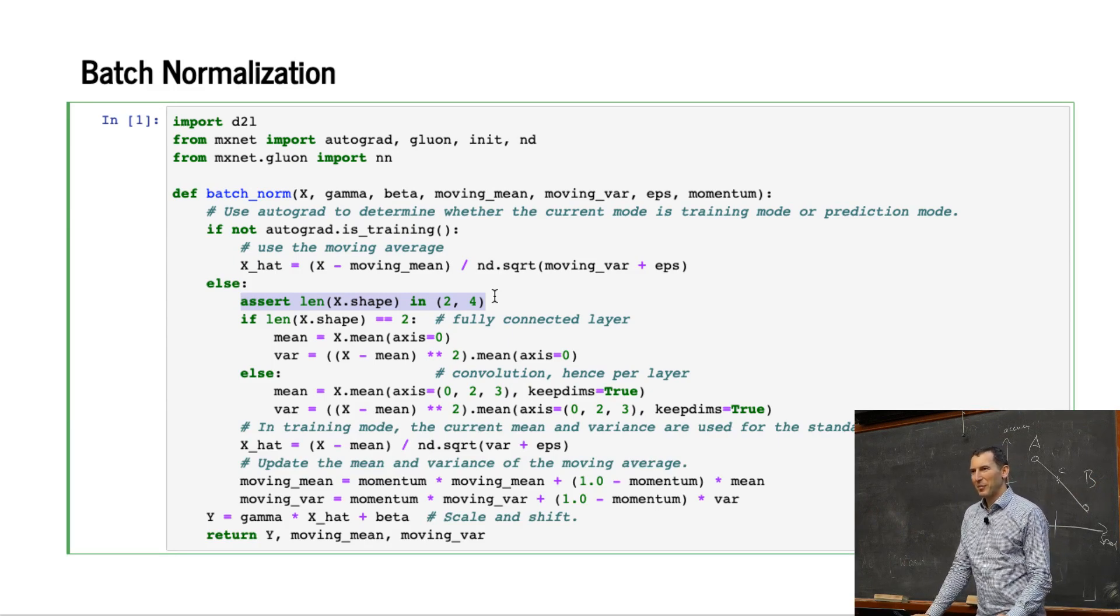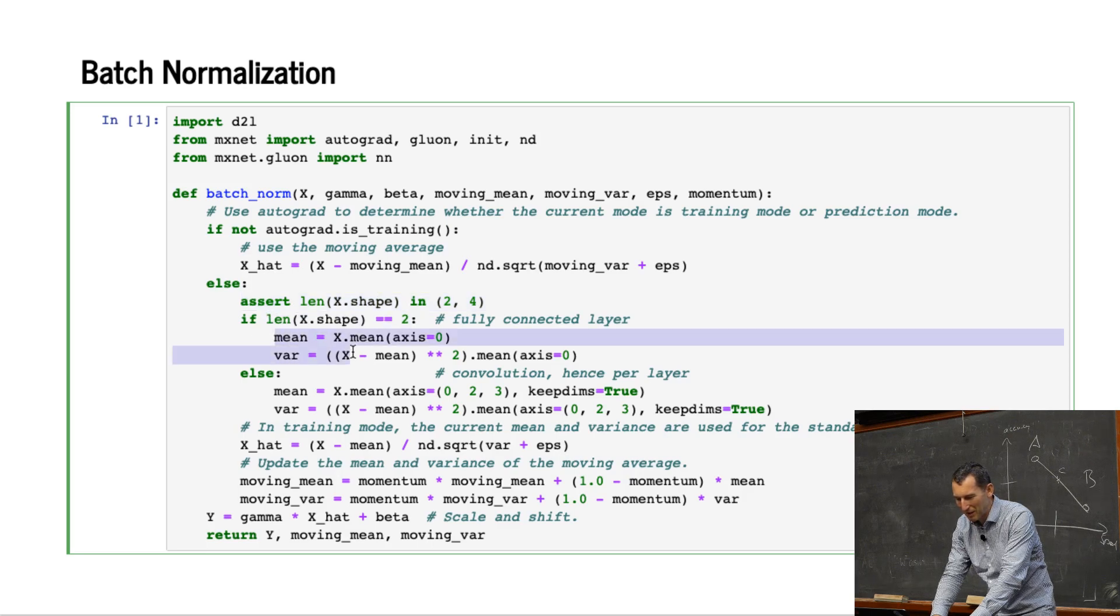To have mini-batch times number of hidden neurons for an MLP, or mini-batch times channels times width times height. So that's why we are checking for two or four. Now, if we have two dimensions, then I just go and compute the mean and the variance and I rescale. That's the batch norm for a multi-layer perceptron.